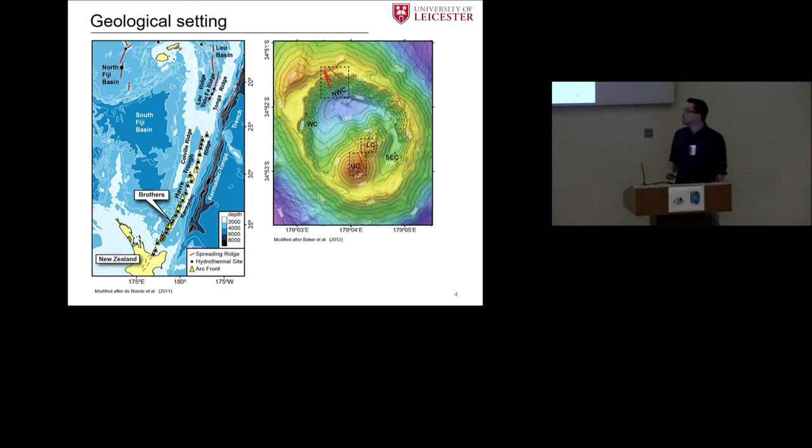We have a closer look now on Brothers. You see here a bathymetric map. All these arc volcanoes here typically show a caldera, and quite often, a younger volcanic cone complex. We have, all together, five identified hydrothermal active sites at Brothers, which is the western caldera, northwestern caldera, and the southeastern caldera, and two active sites associated with the volcanic cone, the upper cone, and the lower cone hydrothermal systems. Samples we studied are from the northwestern caldera, and from both sites at the cone, shown by these little red lines, which are the dredge locations of our samples.